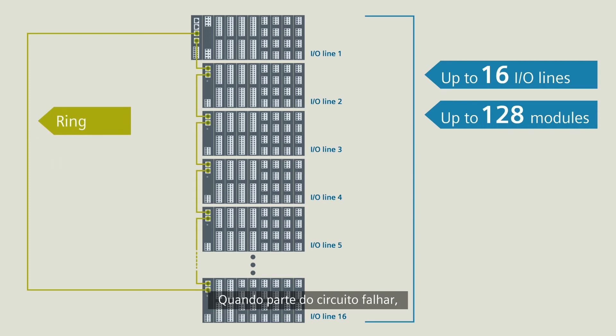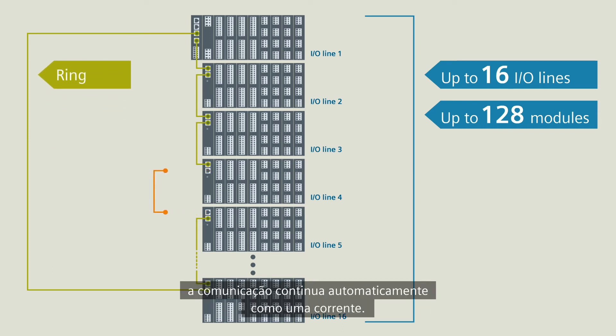When part of the circuit fails, the communication then automatically continues as a chain.